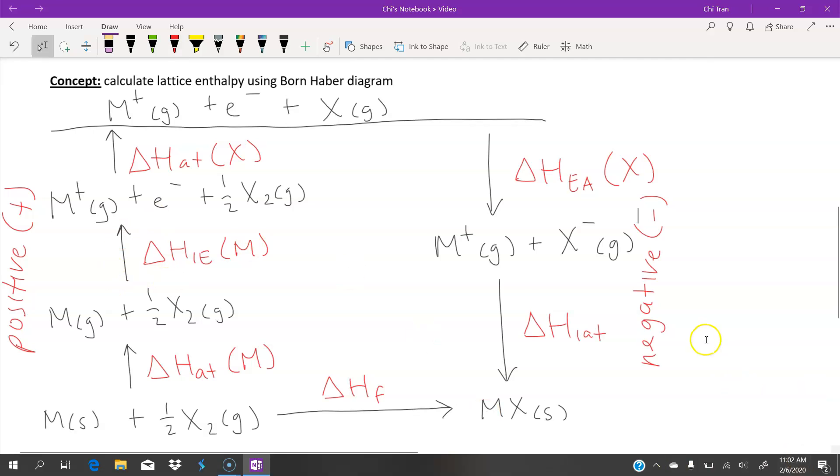What's a bit confusing here is the enthalpy of lattice - it's actually a positive value, but because it's on this side it's meant to be a negative value. So how we're going to represent that is we're going to flip our arrow around, because the sign of the amount of energy is the opposite.